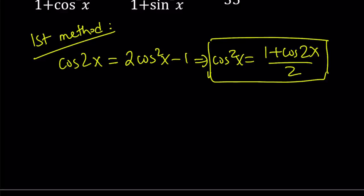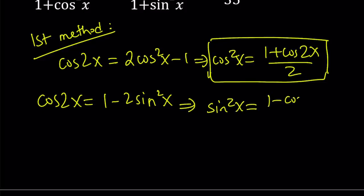Great. Let's go ahead and do the same thing for sine squared. That's going to be 1 minus 2 sine squared x. And from here, sine squared x can be written as 1 minus cosine of 2x divided by 2.